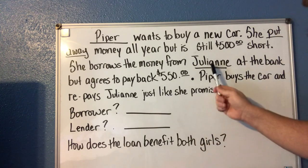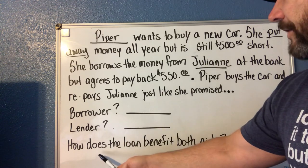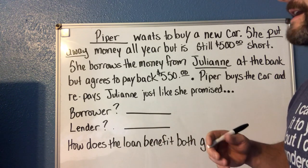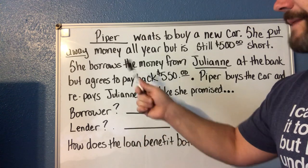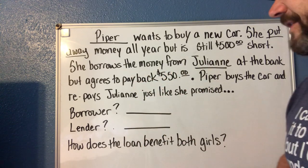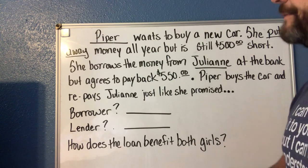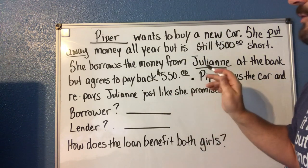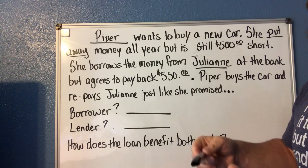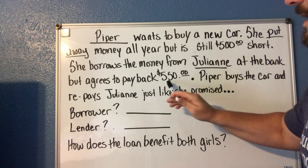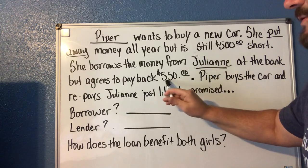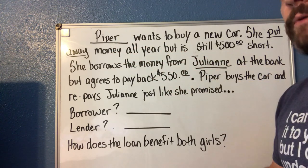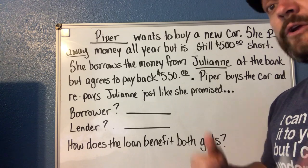How does the loan benefit both girls? Piper gets to buy the car now while it's on sale, and Julianne gets the interest paid to her. Piper borrowed five hundred dollars but has to pay back five hundred fifty, so they both have a benefit and both get something out of it. I hope you guys got something out of this too — thanks for watching, now go do your Think Up math. Bye!